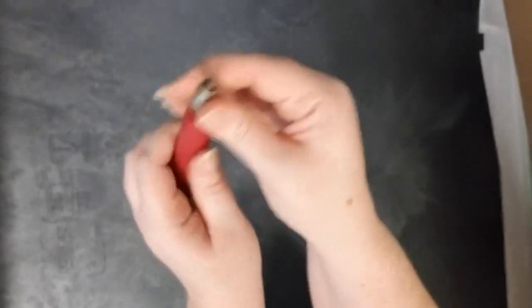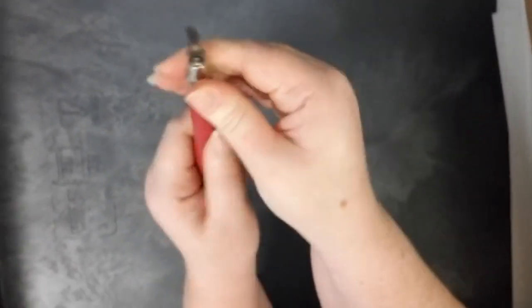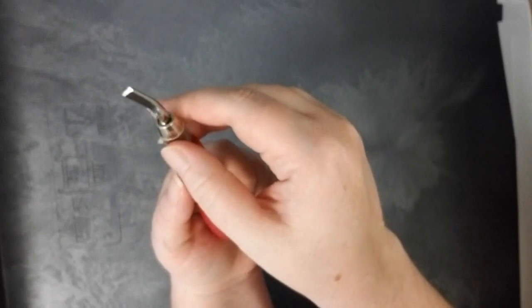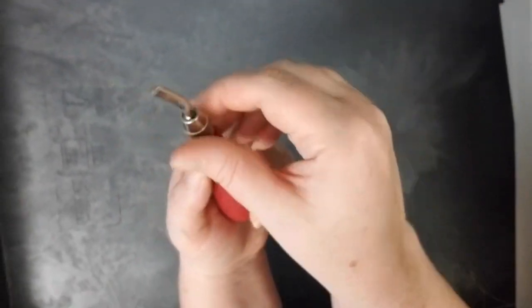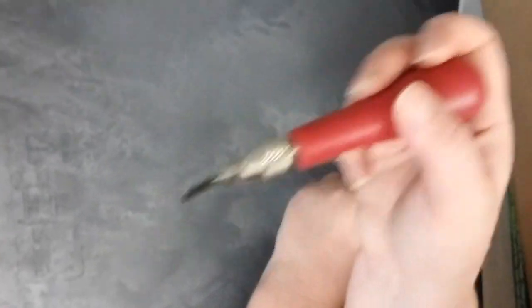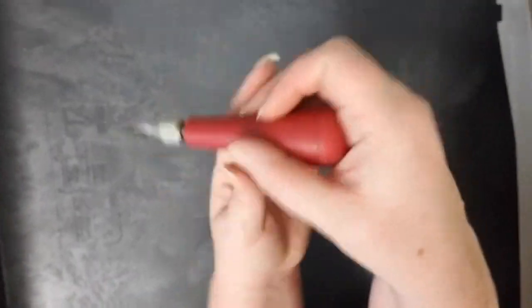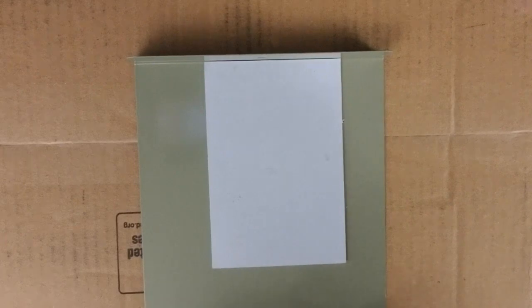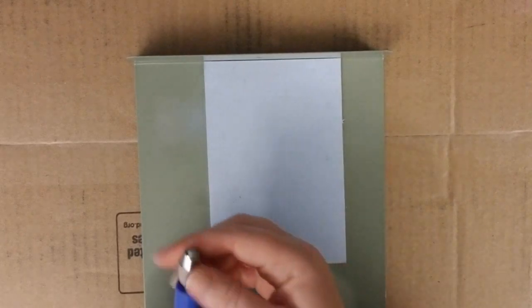Once it's in, then you tighten it until it doesn't really turn anymore. You don't want to tighten it so tight you can't get it undone, but you do want it nice and firm so that when you carve, it's not going to go anywhere. Okay, so now I am ready to start practicing with my blade.